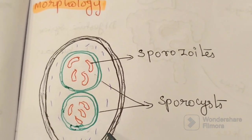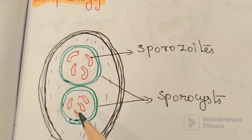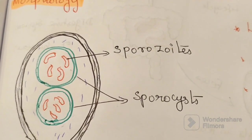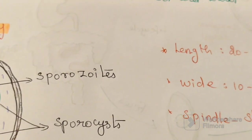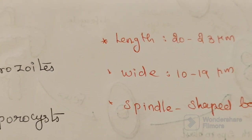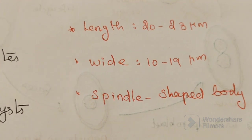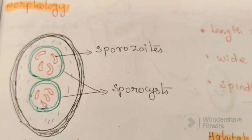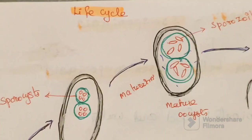Two sporocysts, each sporocyst containing four sporozoites — four sporozoites each — giving a total of eight sporozoites in a single oocyst. The length is 22 to 23 micrometers, width 10 to 19 micrometers, and it has a spindle shape. This is the morphology of the oocyst of Isospora belli.